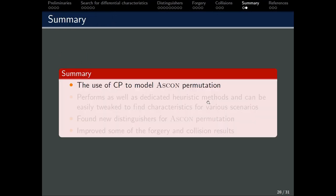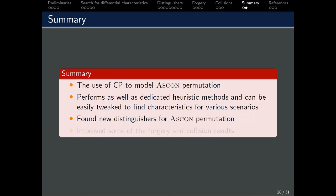Now, we will move on to the summary. In this work, we use an automated method, CP, to actually model the ASCON permutation, and it actually performs as well as the dedicated heuristics methods. It can also be easily tweaked to find characteristics for various scenarios. The advantage of CP is that the formulation is intuitive, and therefore, it is actually less prone to errors. This is in comparison to MILP, where we are only restricted to using only integers and inequalities. We have also found new distinguishers for the ASCON permutation, and finally, improved some of the forgery and collision results.